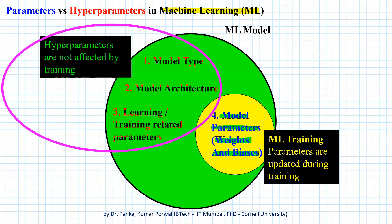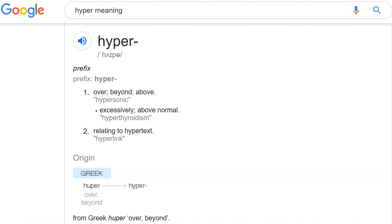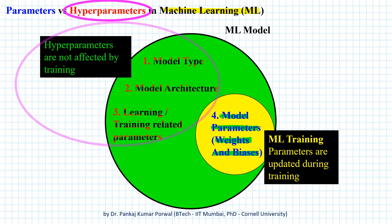Rather, these parameters affect the speed and quality of our training process. So in a sense these parameters are over, beyond, or above our training process. And if we ask Google what we call a thing which is over, beyond, or above something, the prefix for that is 'hyper'.